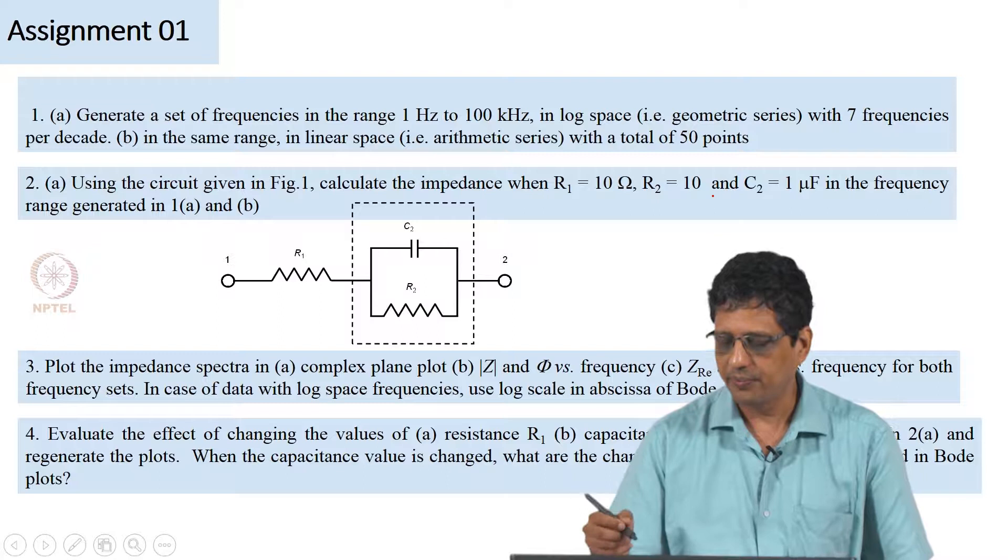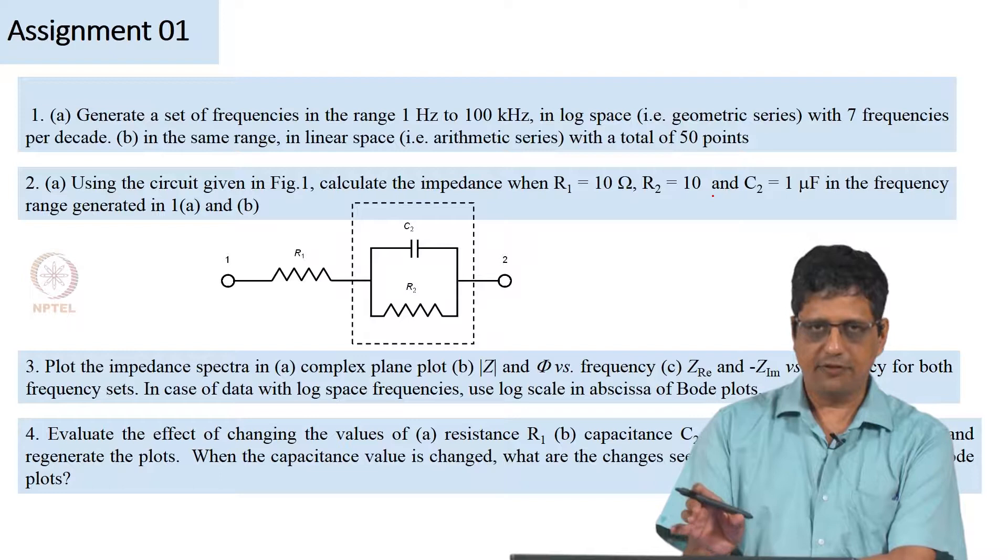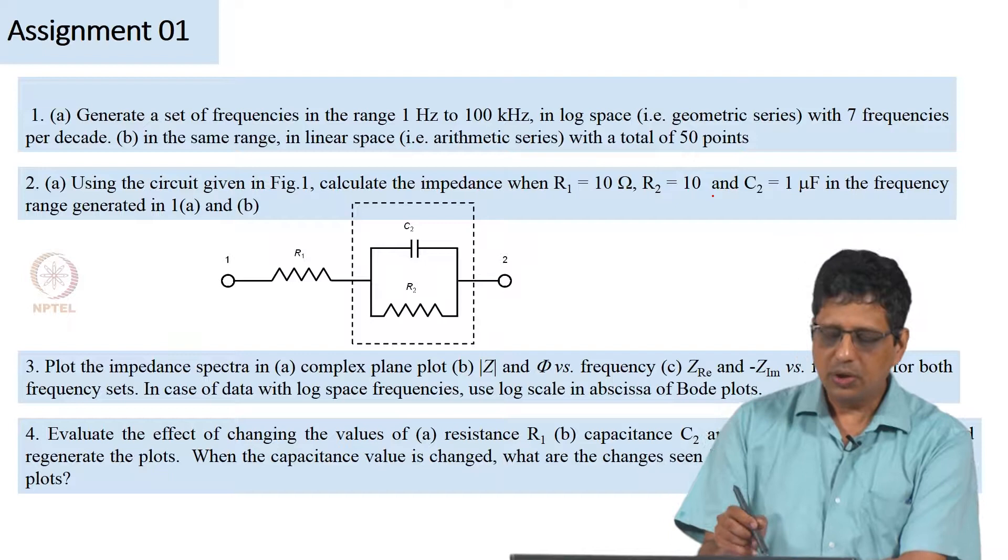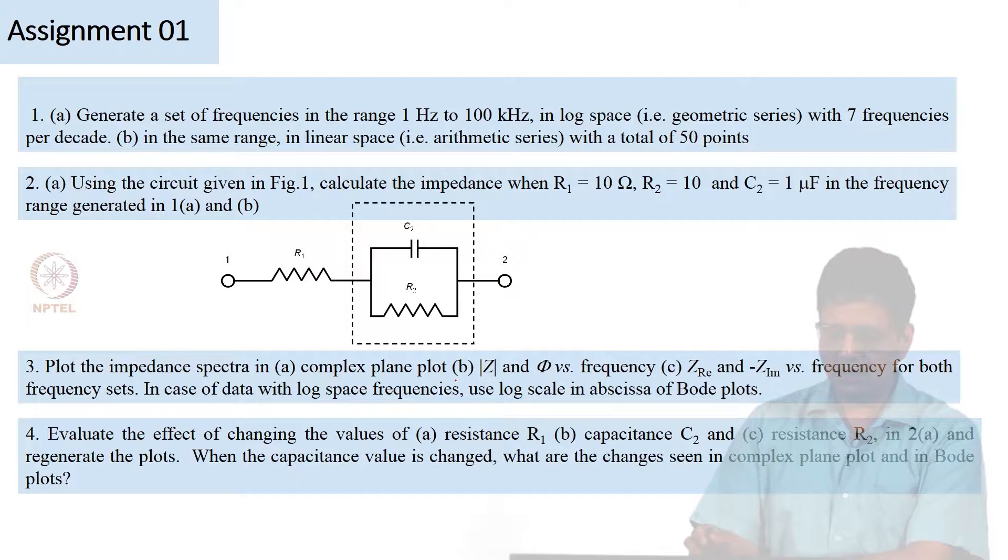And if we generate a spectrum using the set of frequencies that we got in the first part, what would we get? We want to plot that either in the complex plane plot or as Bode plot. In the Bode plot, you can plot magnitude as a function of frequency and phi or the phase as a function of frequency, that is one way.